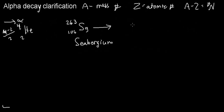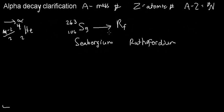It turns into rutherfordium, denoted as Rf. We would lose two protons, which would mean we'd have Z = 104. It becomes a different element — a different substance entirely.